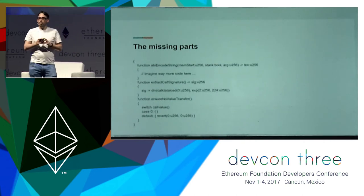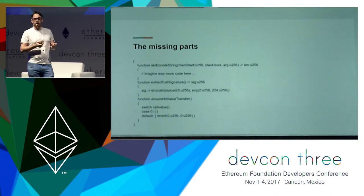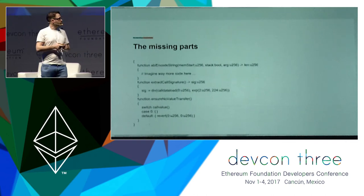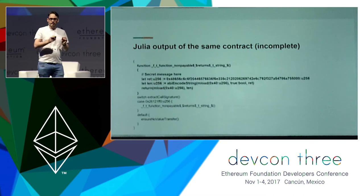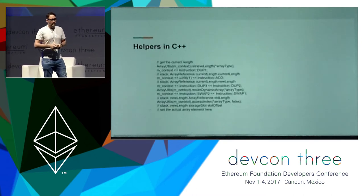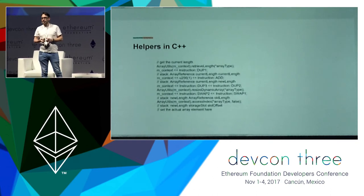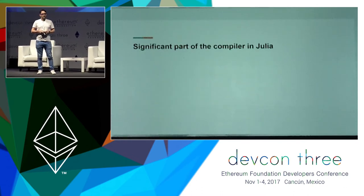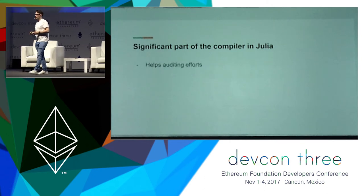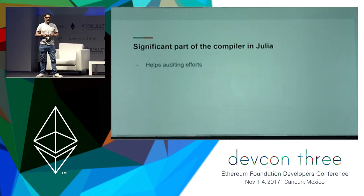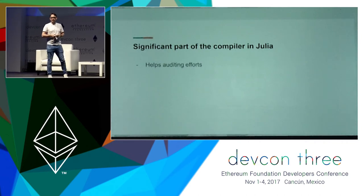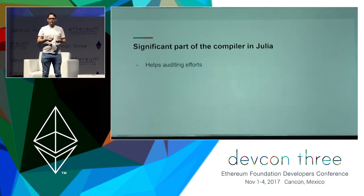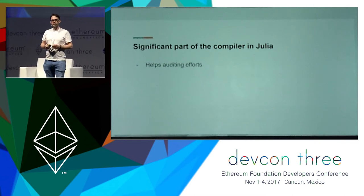One thing to notice: extract call signature is a one-liner. That's why optimizations make sense — this should be inlined; it shouldn't be a function call, it should just be those few instructions. By moving most of the compiler into Julia from C++, we get a couple of benefits. It should help auditing efforts, because one can review this much simpler language Julia and all the helpers written in it, as opposed to finding someone willing to review C++.